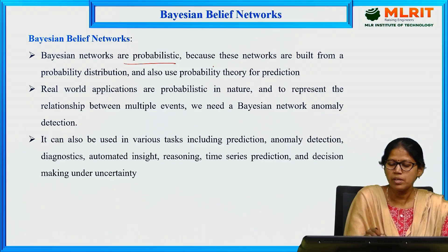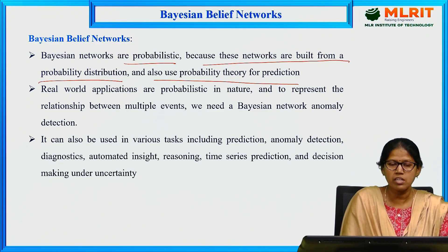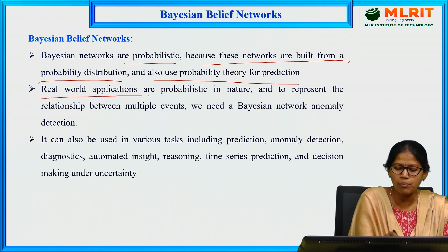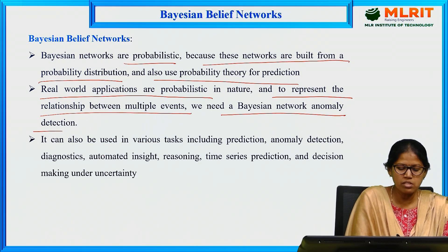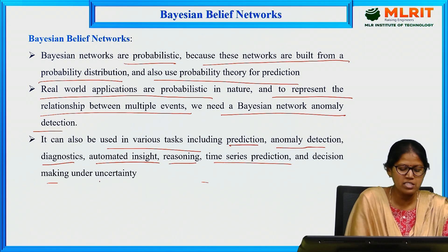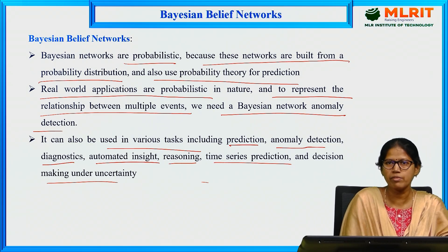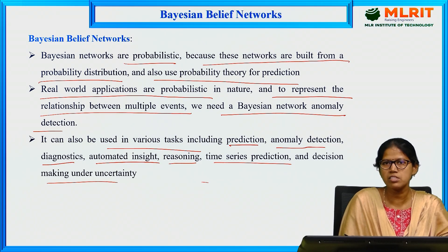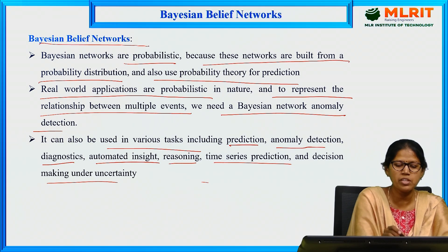Bayesian networks are probabilistic because they are built from a probability distribution and also use probability theory for prediction. Real world applications are probabilistic in nature, and to represent relationships between multiple events we need a Bayesian network. It is used in various tasks including prediction, anomaly detection, diagnostics, automated insight, reasoning, time series prediction, and decision making under uncertainty. Humans cannot guarantee a 100 percent true statement, so we use probability — 90 percent or 80 percent — to handle uncertainty.